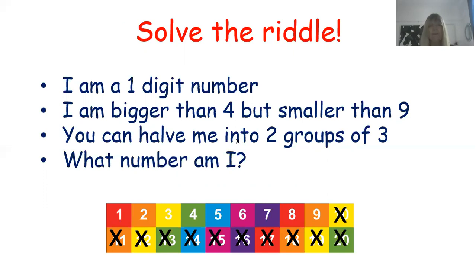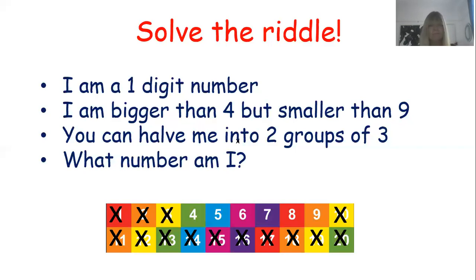That's one, two, three, four, five, six, seven, eight, nine. The next clue: I am bigger than four. Is one bigger than four? No. Is two bigger than four? No. Is three bigger than four? Three is less than four. Is four bigger than four? No. I am bigger than four but smaller than nine, so it can't be nine either. We've worked out it can only be five, six, seven, or eight.